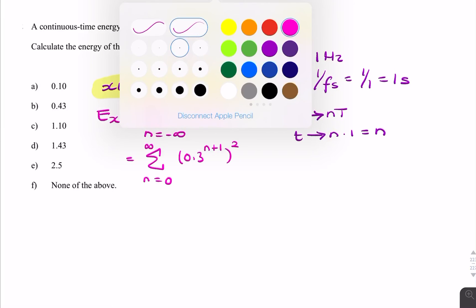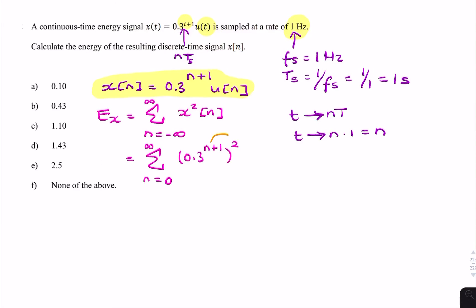Now what I can do is I can exchange the order of these exponents. So my expression looks something like this: n equals 0 to infinity of 0.3 squared to the power n plus 1.